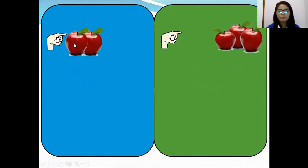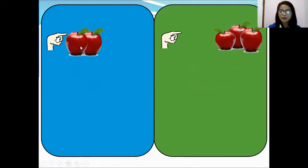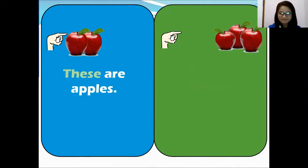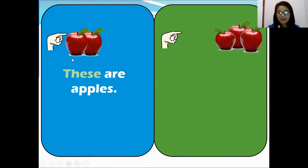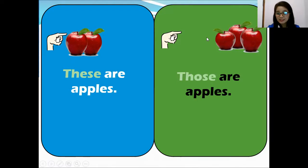Another example. We have one, two. A while ago it's only one, but now we have two apples and three apples. So, what do you think? These are apples — why? Because it's more than one, it's already two. And very near. And this one — 'that' is for singular, but this time we're going to use 'those' because there are one, two, three apples. So, those are apples.